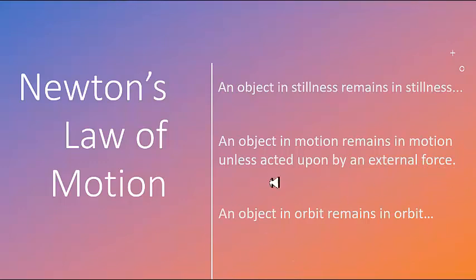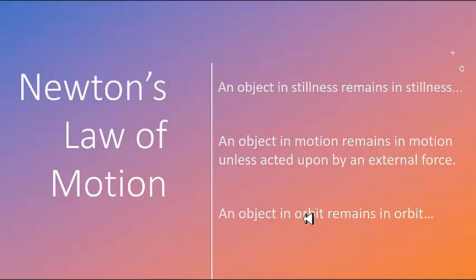I add one more: an object in orbit remains in orbit unless acted upon by an external force. This is an important one that is often left out and misunderstood. An object in orbit — like the Earth orbiting the Sun — is also an inertial frame. An object in stillness is obviously an inertial frame, an object moving linearly at constant velocity is obviously an inertial frame, but an object in gravitational orbit around another body also remains in orbit unless it gets knocked out.